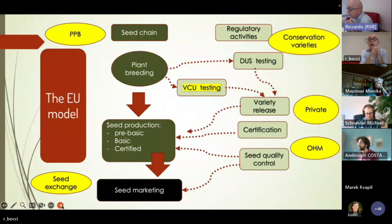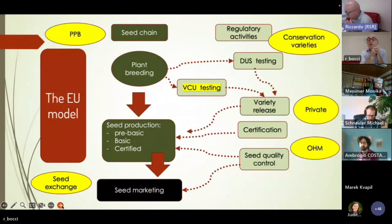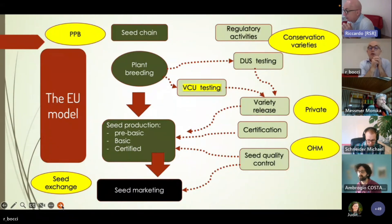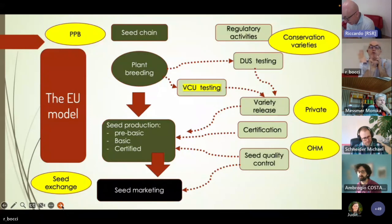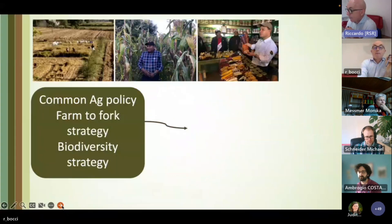There is also the idea to include populations and have some diversified varieties available not only for organic farmers but even for conventional farmers. Still under discussion is the idea of having more control done by private companies under official recognition or control by public authorities. These are the topics on the table for the next negotiation.